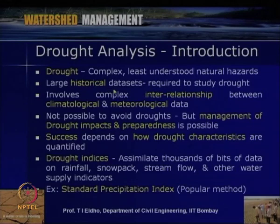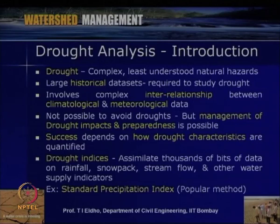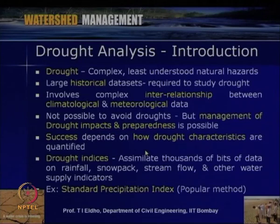We need to analyze large historical datasets and come up with interrelationships between climatological, meteorological, and agricultural data. From this we derive certain indices — called drought indices — that give details like the onset and intensity of droughts. As discussed in the last lecture, it is not possible to avoid droughts, but management of drought impacts and preparedness is possible, so drought mitigation is possible to a certain extent.